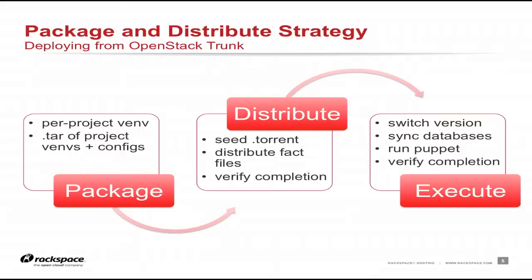We package everything into tarballs containing all the Python code. We then use BitTorrent to distribute it — we have thousands of nodes using BitTorrent to seed and distribute all this code between them. The tool we use is BitTorrent combined with mCollective to kick off the download and seeding of the torrent. mCollective is by Puppet Labs, and it's basically our answer to the problems we had with parallel SSH, which takes a long time when you're dealing with thousands of nodes.